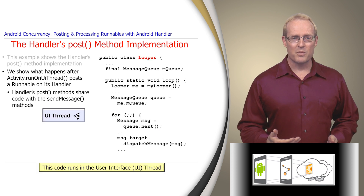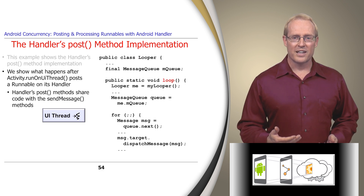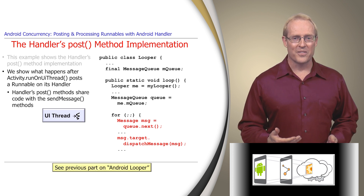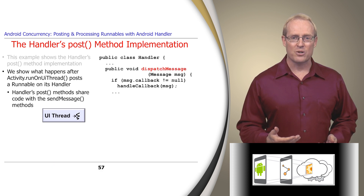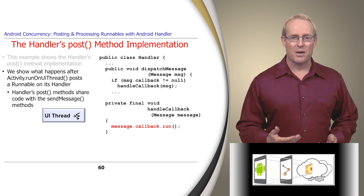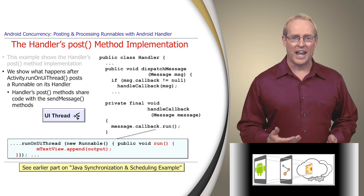At this point, we switch our focus from the background thread to the user interface thread, starting with its looper. The looper's loop method collaborates with the message queue and handler classes, as described in a previous video. In particular, loop calls dispatchMessage to process an encapsulated runnable via the handler's handleCallback method. This method then invokes the encapsulated runnable's runHook method to execute the command. Run executes in the thread associated with the handler instance, which in this case is the user interface thread.